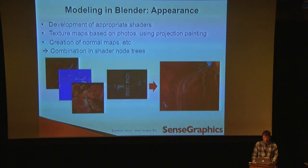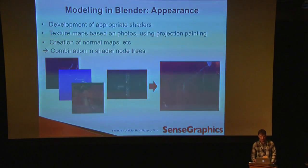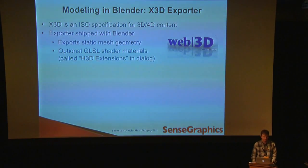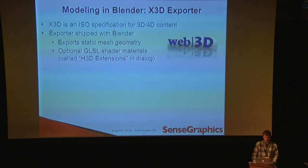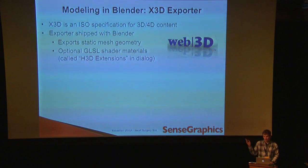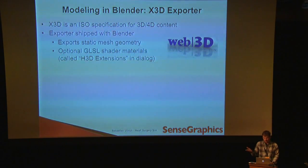After validating everything with the doctors, we needed to get the model into the simulator, and for this we used the X3D exporter. X3D is an open file format with an ISO specification. The exporter included in Blender is already quite useful, however it only allows you to export static mesh geometry. One thing already added a few years ago is support to export shader materials from Blender as GLSL code, using the H3D Extensions option in the exporter dialog — even though it's called H3D Extensions, it is actually an X3D standard.